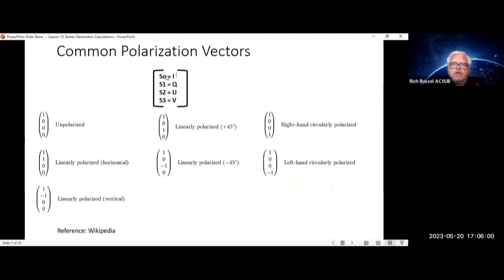This could also be shown in a vector where S1, S2, S3, S0 is down, and that's equal to your IQUV nomenclature. So for an unpolarized signal, S0 equals 1, and S1, S2, and S3 equals 0. Linear polarized horizontal would be 1, 1, 0, 0. And for vertical, it would be 1, minus 1, 0, 0.